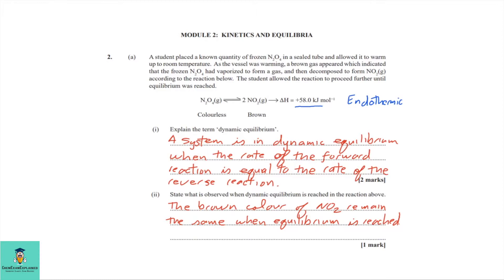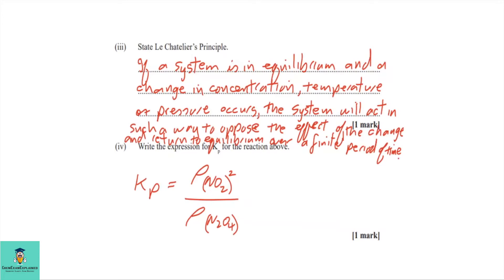Remember, the reaction is dynamic, so the rate at which N2O4 is being used up is equal to the rate at which NO2 is formed. What you should observe is the brown color of NO2 remaining constant. N2O4 is colorless so you would not observe that, but you are observing the brown NO2 at equilibrium.